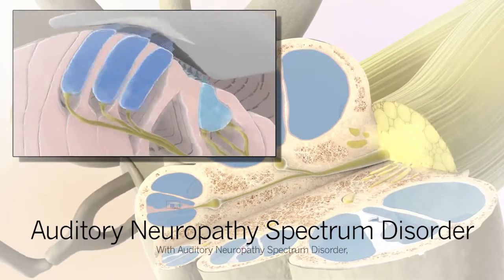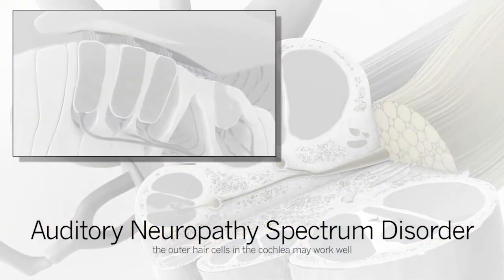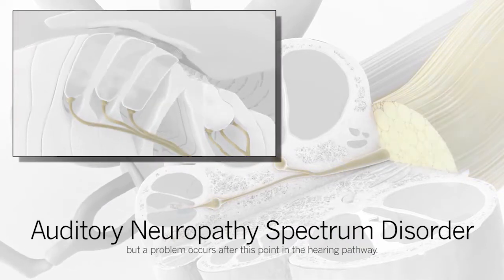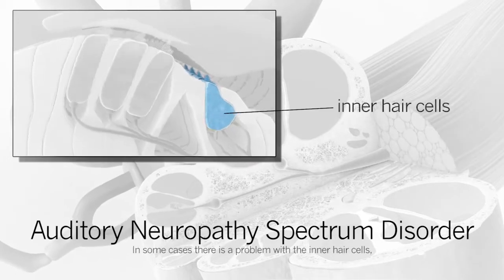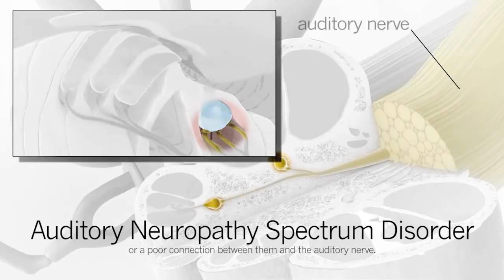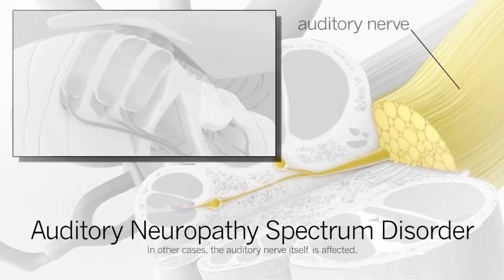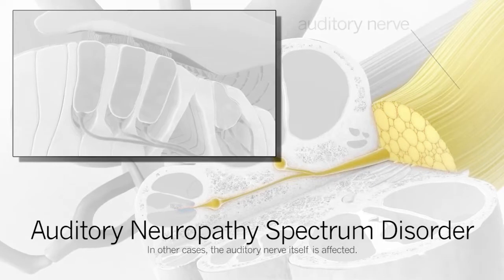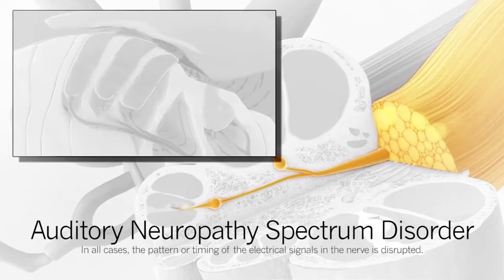With Auditory Neuropathy Spectrum Disorder, the outer hair cells in the cochlea may work well, but a problem occurs after this point in the hearing pathway. In some cases, there is a problem with the inner hair cells or a poor connection between them and the auditory nerve. In other cases, the auditory nerve itself is affected.